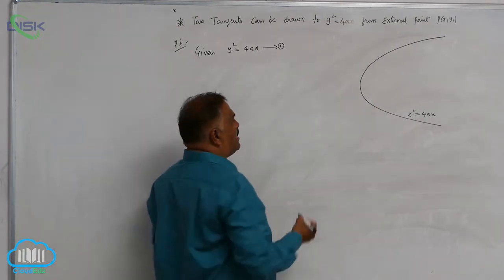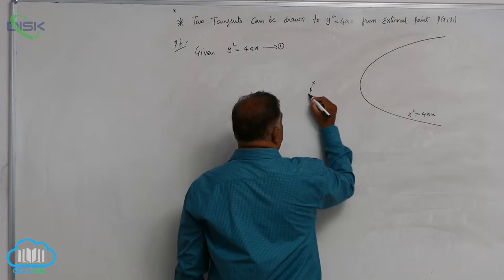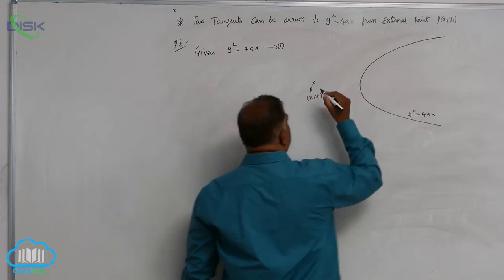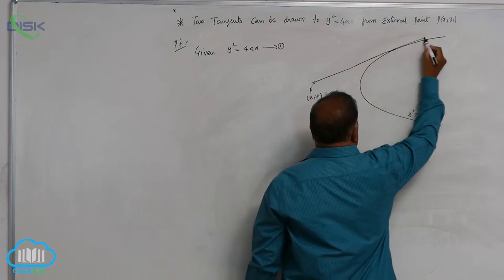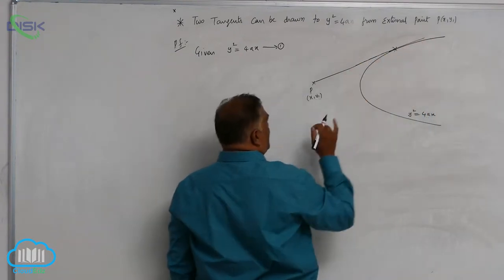Let us consider some external point P at x1, y1. Through this point, if you can draw a tangent line like this, it touches at some point.